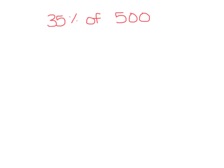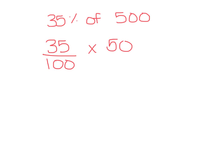So we have 35% of 500. You want to rewrite your problem so 35% is 35 out of 100. 'Of' means multiplication, and then 500 over 1. Check to see if you can cross simplify — in this problem we can. We can divide 100 by 100 to get 1, and 500 divided by 100 to get 5.